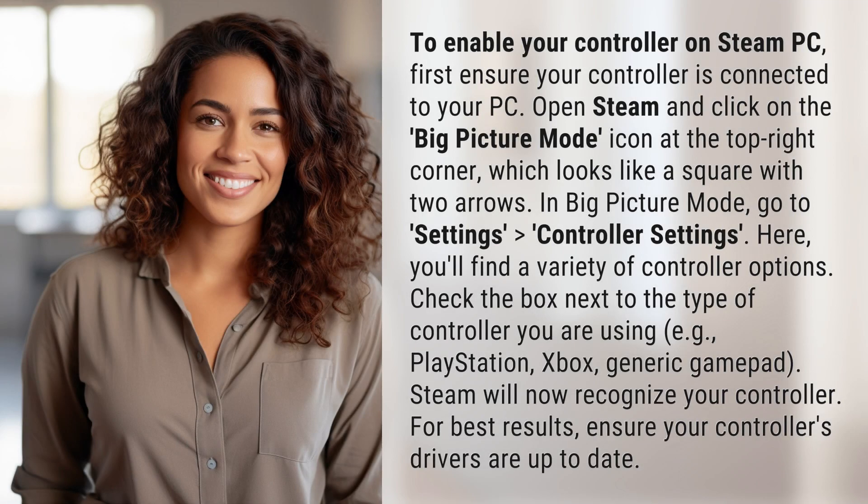To enable your controller on Steam PC, first ensure your controller is connected to your PC. Open Steam and click on the Big Picture Mode icon at the top right corner, which looks like a square with two arrows.